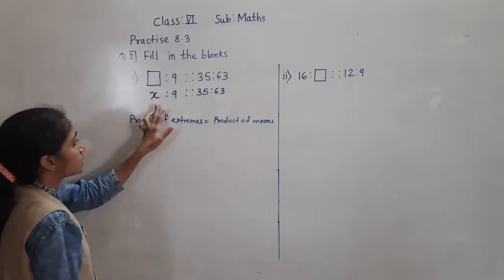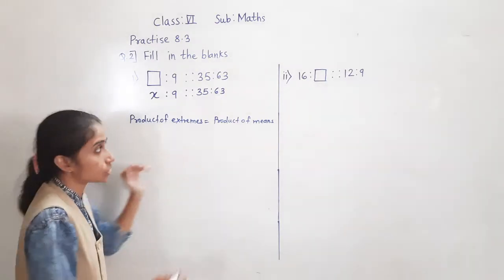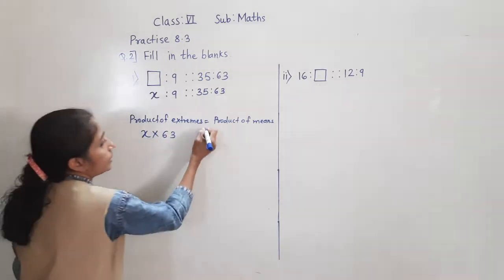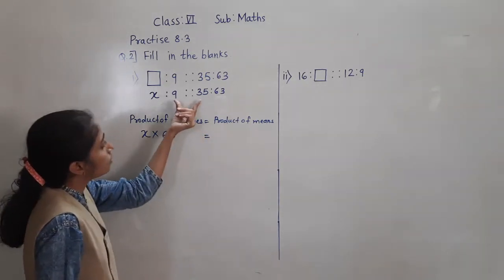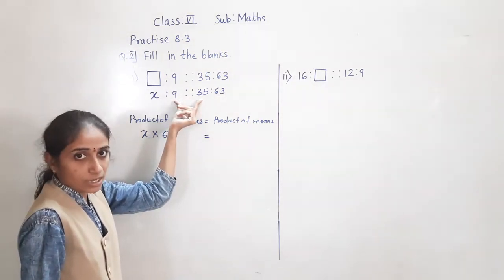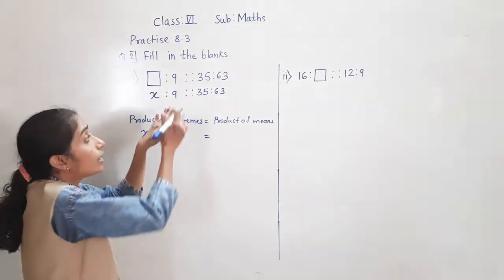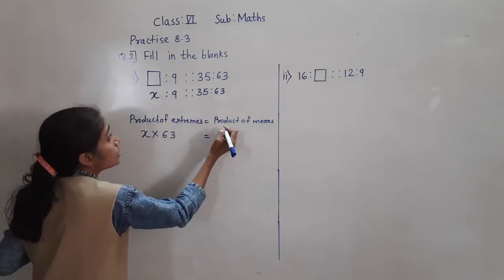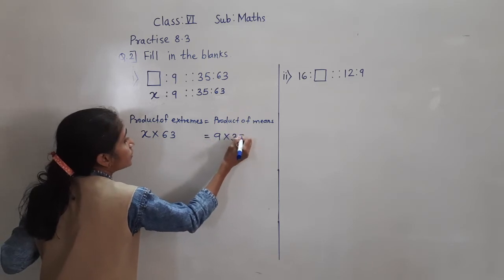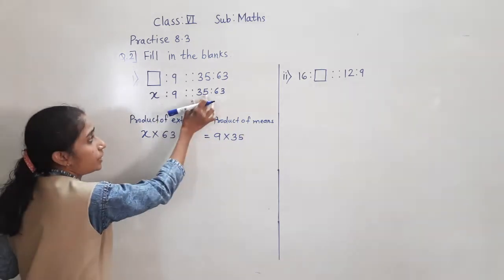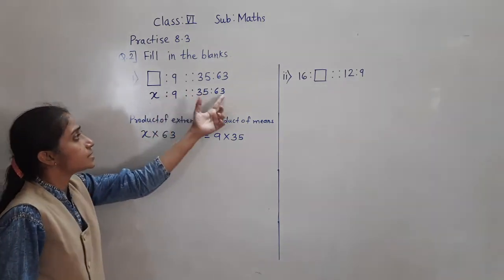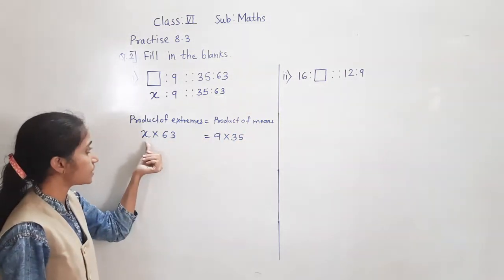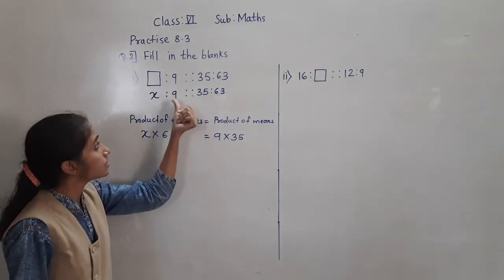So what we will do? X multiplied by 63 - that is the product of extremes. Product means multiplication. So product of extremes is X multiplied by 63, equal to product of means. The means are the middle terms - 9 and 35. So 9 multiplied by 35. X and 63 are the outer terms, so they are extremes. The middle terms, 9 and 35, are the means. So X into 63 equals 9 into 35.